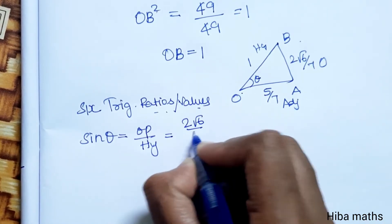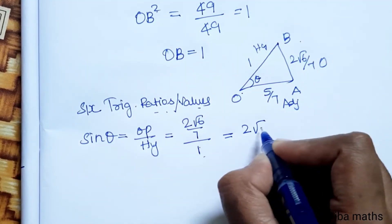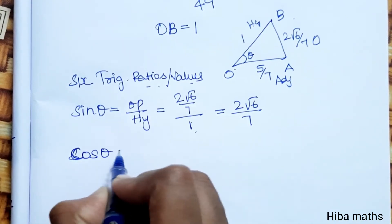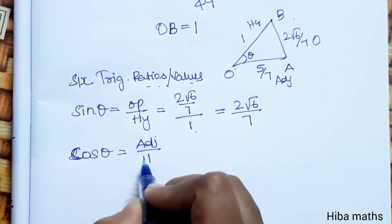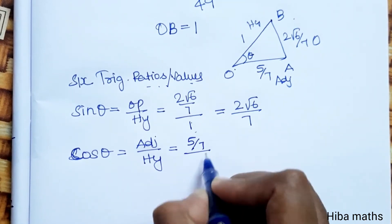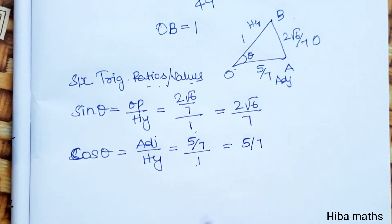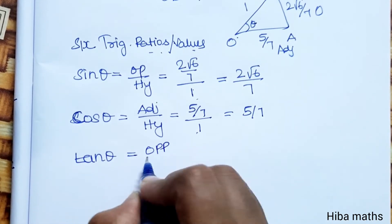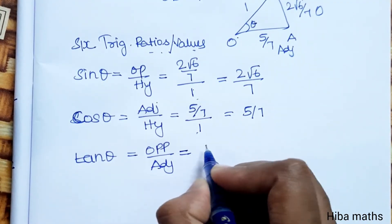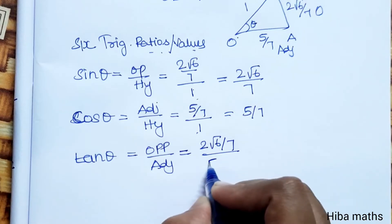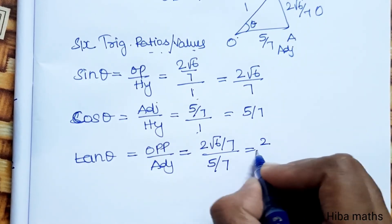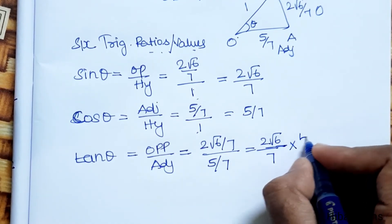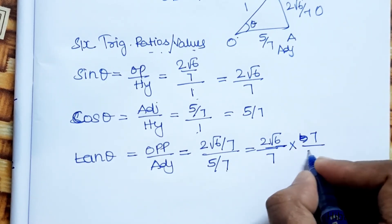sin θ = opposite/hypotenuse = (2√6/7) / 1 = 2√6/7. cos θ = adjacent/hypotenuse = (5/7) / 1 = 5/7. tan θ = opposite/adjacent = (2√6/7) / (5/7) = (2√6/7) × (7/5) = 2√6/5.